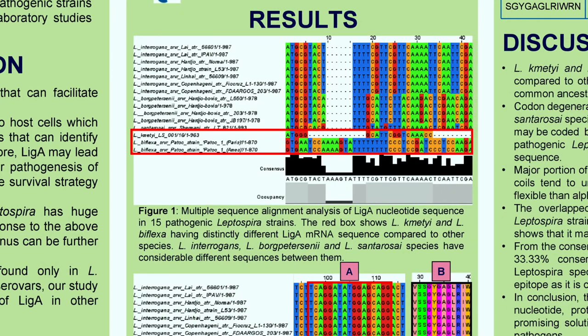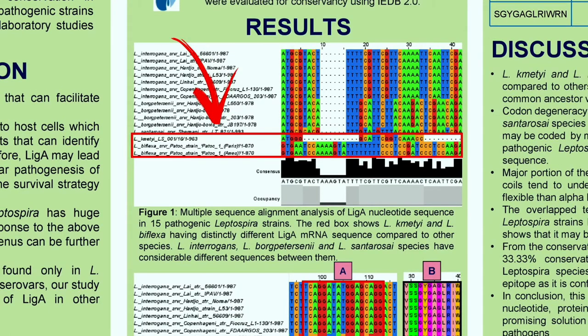Let's move on to the results. This figure shows the multiple sequence alignment of LiA nucleotide in 15 Leptospiral strains. It was found that Leptospira kirschneri and Leptospira biflexa have different nucleotide sequences compared to other strains. This finding is supported by Voronina and colleagues, who state that Leptospira kirschneri does not have an immediate common ancestor with other pathogenic Leptospiral species.